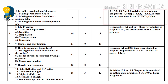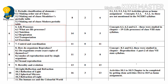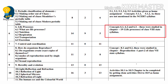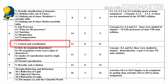Next, Biology — Life Processes. Topics: Nutrition (6.2 and 6.3), Respiration (6.4 and 6.5), Transportation, and Excretion. Also 6.1 — What Are Life Processes? The next lesson is Control and Coordination.